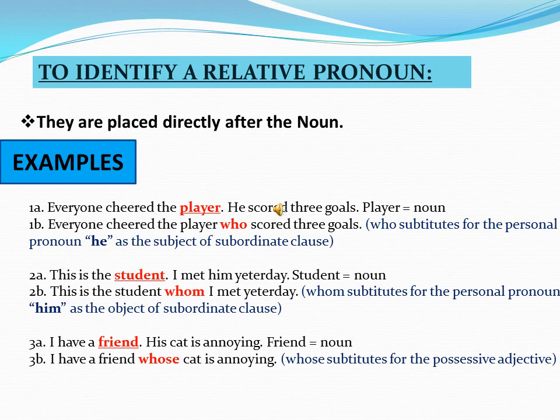Let's look at some examples. Example one A: 'Everyone shared the player, he scored three goals.' Here, 'player' is a noun. In sentence one B: 'Everyone shared the player who scored three goals.' Here, 'who' is the relative pronoun. After the noun 'player,' we use 'who,' making it the relative pronoun.